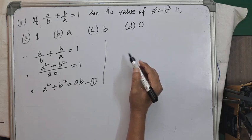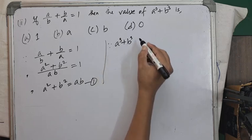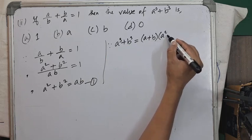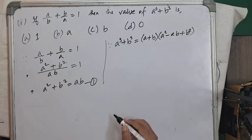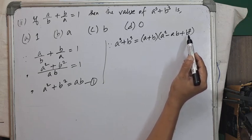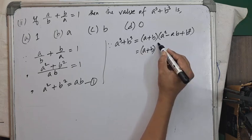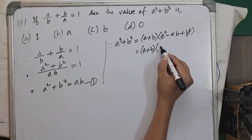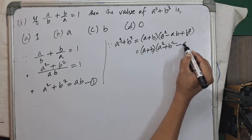Now, a³ + b³ = (a+b)(a² - ab + b²). We rewrite a² - ab + b² by grouping a² + b² together and writing minus ab separately.